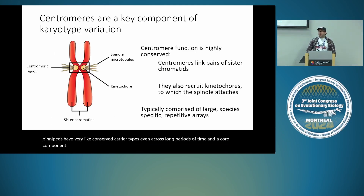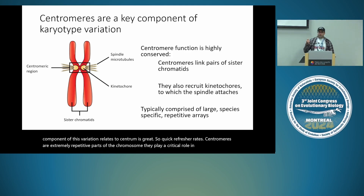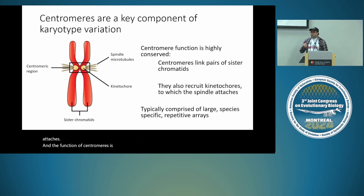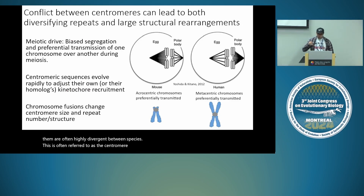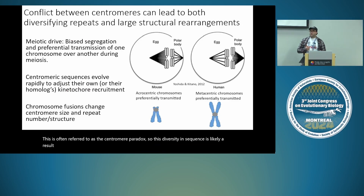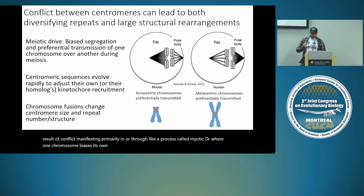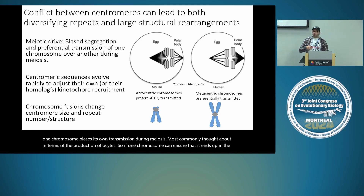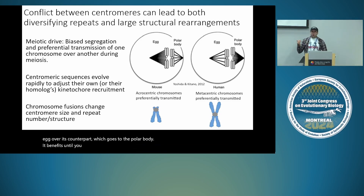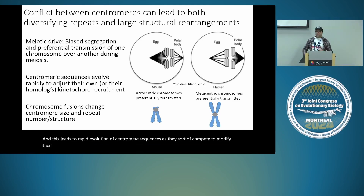A core component of this variation relates to centromeres. Quick refresher: centromeres are extremely repetitive parts of the chromosome. They play a critical role in cellular division by linking pairs of sister chromatids, and they recruit kinetochores to which the spindle attaches. The function of centromeres is highly conserved, but the repetitive sequences that form them are often highly divergent between species — this is often referred to as the centromere paradox.